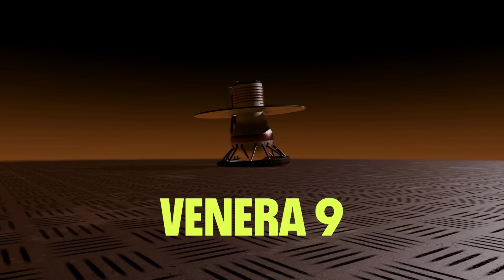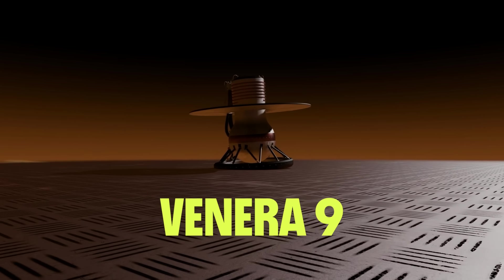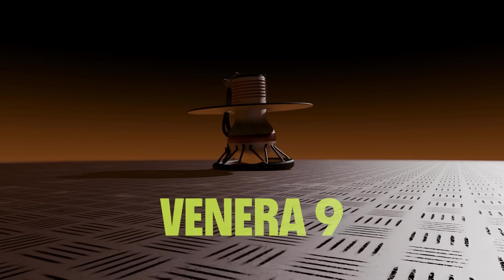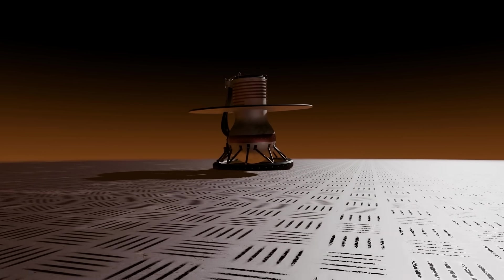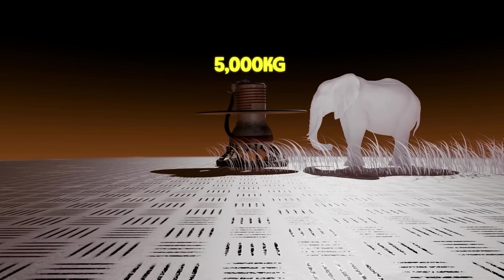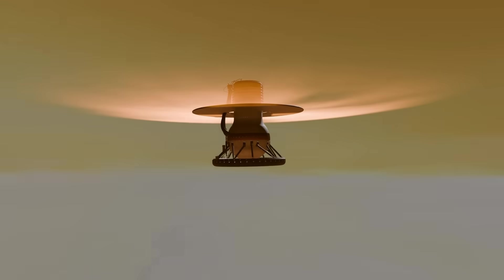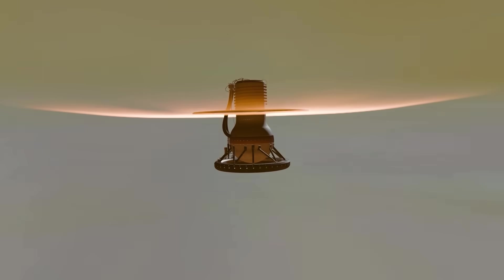For Venera 9, the Soviets made a fundamental change to the probe's design, and you can tell there's something different just by looking at it. The descent capsule itself has of course been beefed up yet again. We are now tipping the scales at nearly 5 metric tons, or around the weight of a fully grown African elephant. But the standout features have to do with a new landing procedure.